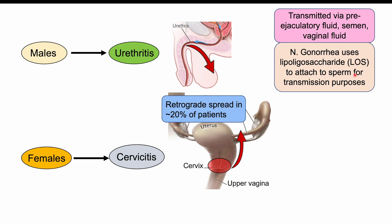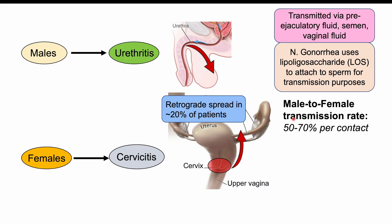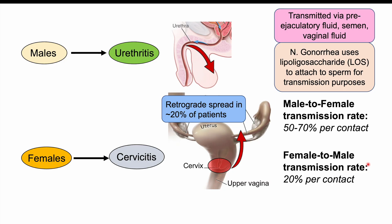The risk of getting gonorrhea depends on who is spreading it. Male-to-female transmission rate is 50% to 70% per contact, whereas female-to-male transmission rate is only 20% per contact. Some of this relates to the ability of these organisms to use sperm as a transmission mechanism. Transmission rates for male-to-male or female-to-female have not been well studied, but males can transmit this more readily than females.